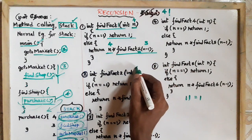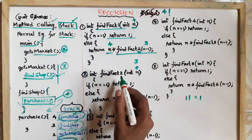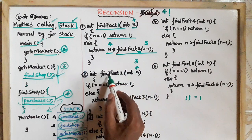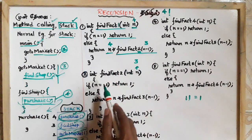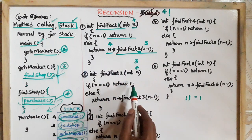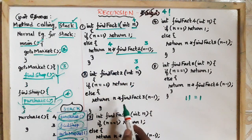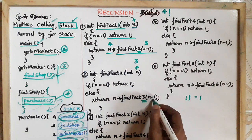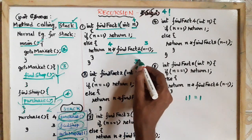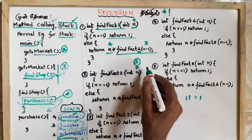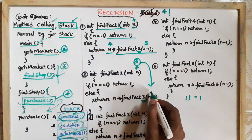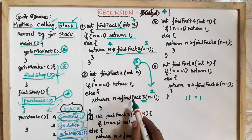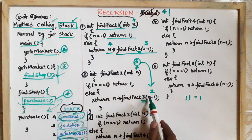Now there is a call to findFact with value 3. Using the same method, it is not 1, so we return 3 into findFact of n-1. The current value is 3, so n-1 is 2. Now we call findFact of 2.